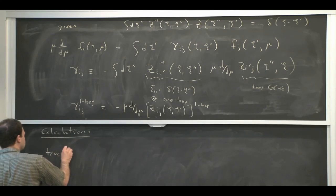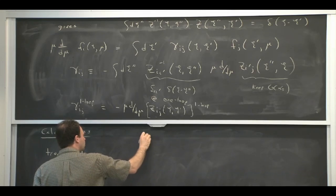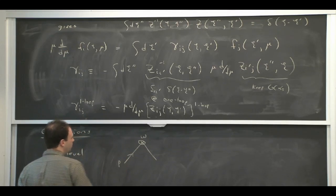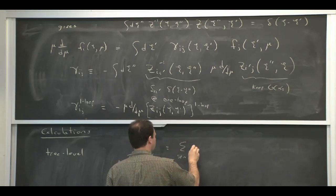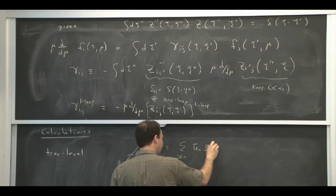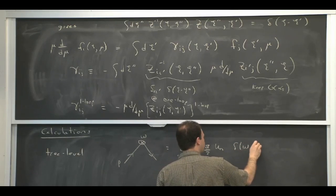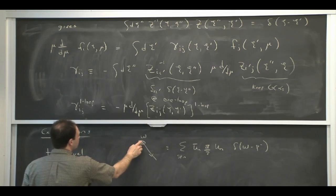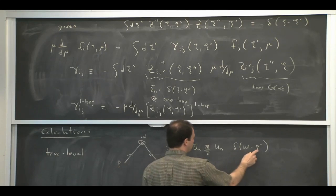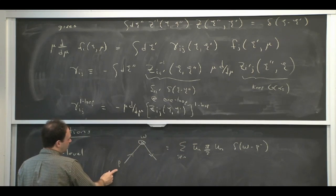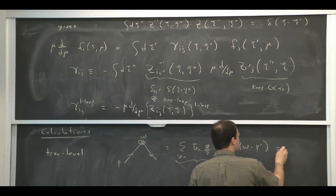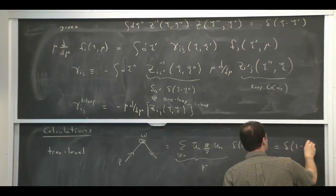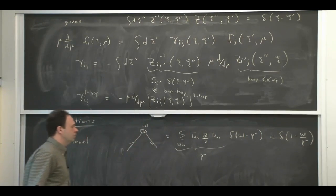Tree level: think about there being an external P for whatever state I'm considering, and the operator is labeled by W. We're summing over spin. We get some spinors and we get a delta function. The delta function in the operator is delta of W minus the label momentum P-bar. In something completely trivial with just one state, we just get the momentum of that state, which is P. This sum over spin here is a P-minus. So the result is a delta function of 1 minus omega over P-minus for this tree-level matrix element.